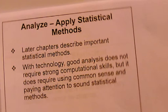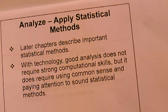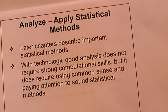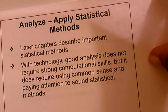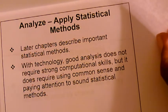Then apply statistical methods — later chapters describe the most important statistical methods, including measures of center and measures of variation, hypothesis testing, and confidence intervals. We'll also be using technology, but good analysis does not require strong computational skills — it requires using common sense and paying attention to sound statistical methods. This is where critical thinking skills can be very vital in making statistical arguments about data.